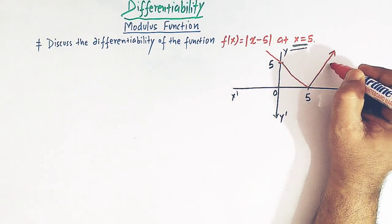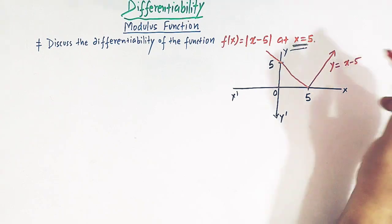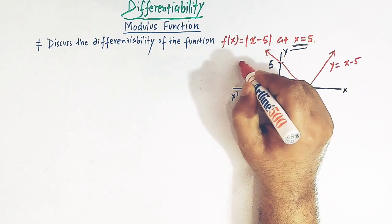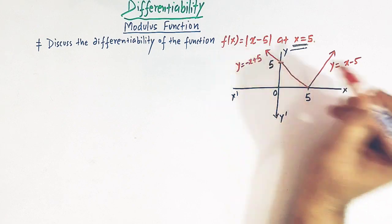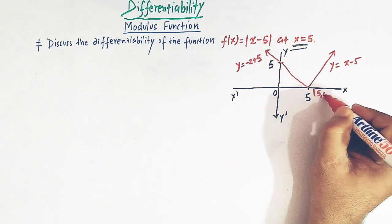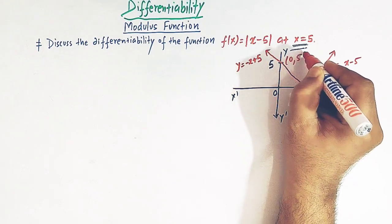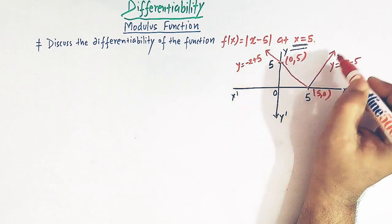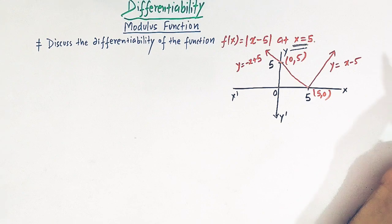This line is y = x - 5 and this line is y = -x + 5. The point (5, 0) is where the graph meets the x-axis, and (0, 5) is the y-intercept. This V-shaped graph is the graph of |x - 5|.